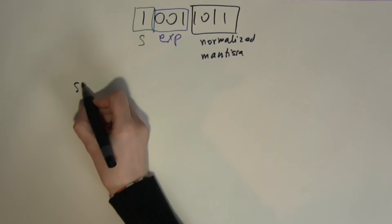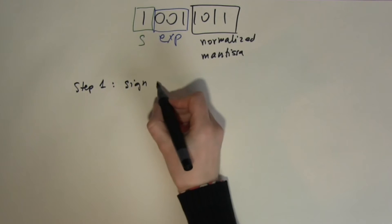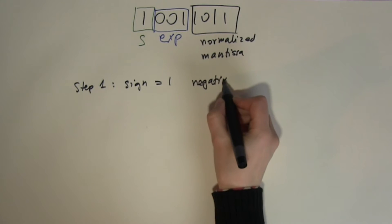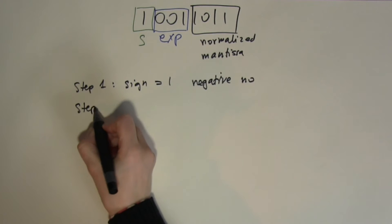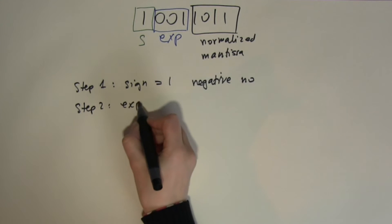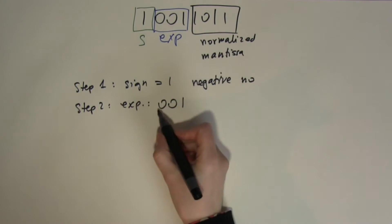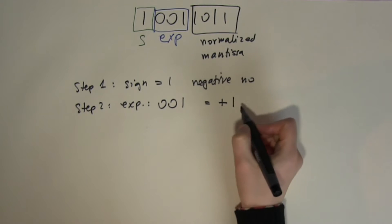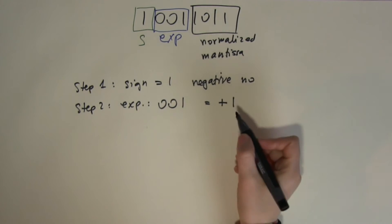Step 1: sign. Because the sign bit equals 1, we have a negative number. Step 2: exponent. Our exponent is 0 0 1. That's a positive number because it starts with a 0, so the exponent is positive 1. That means I will need to move my normalized mantissa one place in the positive direction.